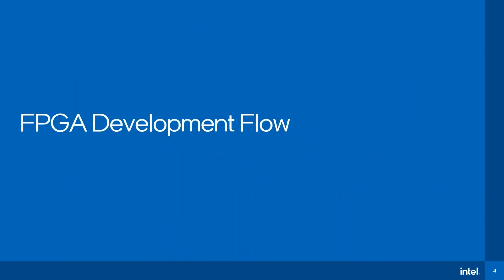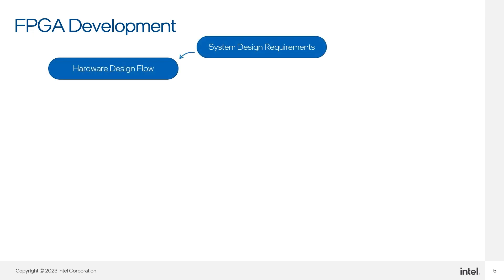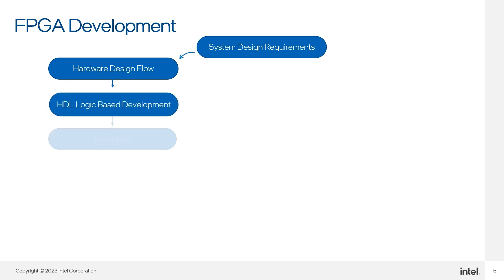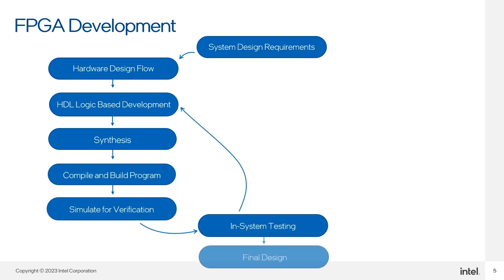Let's quickly review a traditional FPGA development flow to better understand how OFS can help reduce development time and enable quick workload development. FPGA development has both hardware and software aspects. After defining requirements such as power, performance, and interfaces for your design, you can spend a considerable amount of time in hardware and software development. After stitching together your initial design, you can iterate through synthesis, compilation, and verification to achieve optimal routing, timing, and performance.